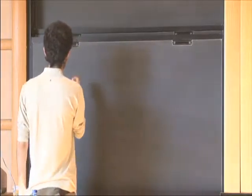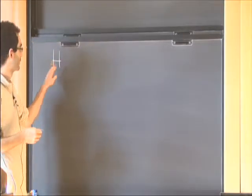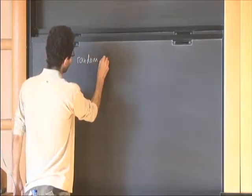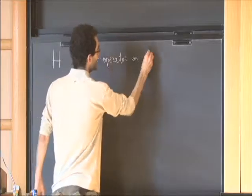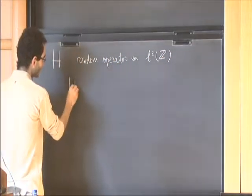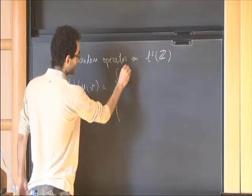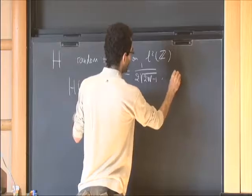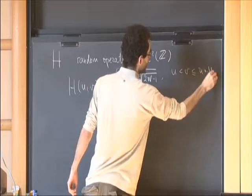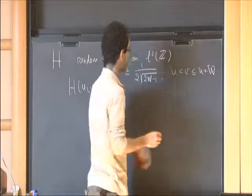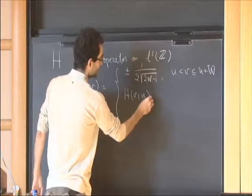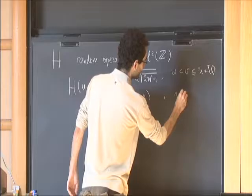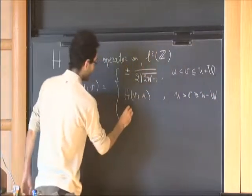Let me start with defining the random band matrices. H is a random operator on L2 of Z. The uv element of H is plus or minus 1 over 2 square root of 2W minus 1 if u is less than v and less than or equal to u plus W, where W is a parameter. It is H of vu if u is greater than v and greater or equal to u minus W, and 0 otherwise.